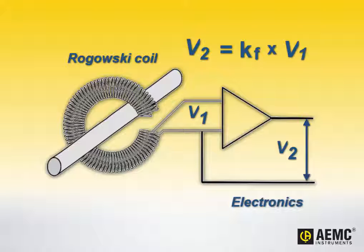In this formula, Kf is a value derived from the physical characteristics of the coil for a given frequency. V2 can then be used to calculate the associated current by applying a frequency-independent scale factor, such as 1 millivolt equals 1 amp.